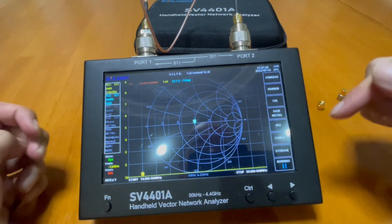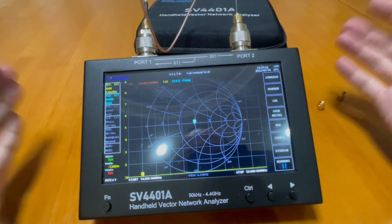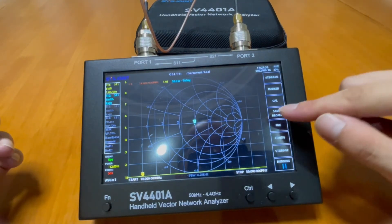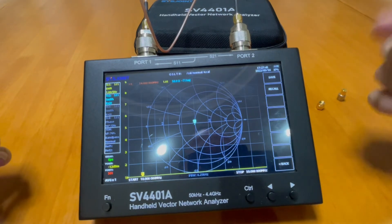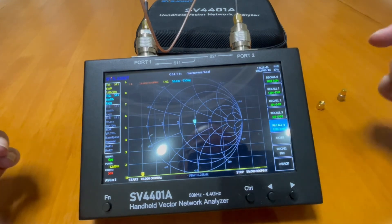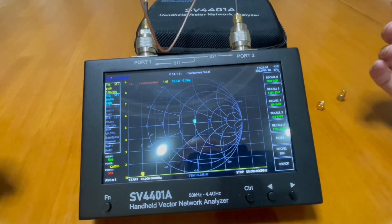Now what it does is in the future, whenever you want to come back to the same frequency range you want to operate on, you don't have to calibrate again. You just need to recall the result that you had calibrated before and recall, and you can find it here. When you click it, it will go back to the status that you calibrated before.